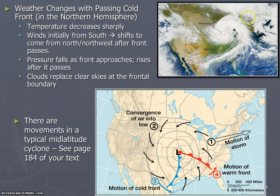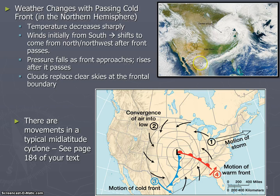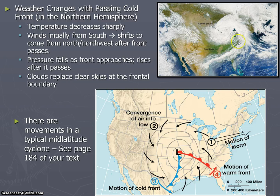After the front passes, the pressure is going to fall as the front approaches. When you did your weather assignment, I asked you to look at pressure — is it falling or rising? That will tell us something about whether precipitation is likely. It makes sense that the pressure falls as the mid-latitude cyclone moves in, because that warm air is being pushed up, so you have less pressure at the surface. Then clouds replace the clear skies along this frontal boundary.